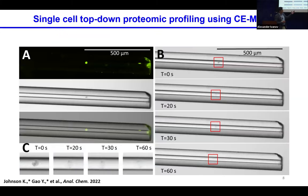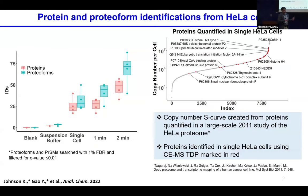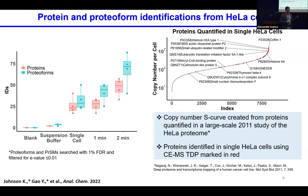We learned how to visualize cells using fluorescent dyes and bright field microscopy, and we checked whether we are lysing the cells. In this case, we used one plug of lysis buffer — formic acid — and with one plug it takes about 30 to 60 seconds to lyse the cell, while with two plugs surrounding the cell it happens pretty much instantaneously. With that approach, we didn't cover a huge dynamic range. Mostly we found proteins and protoforms of high abundance, but some from intermediate and medium abundance. That was the very first work on top-down proteomics of single cells.